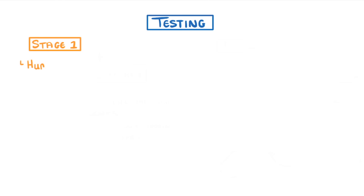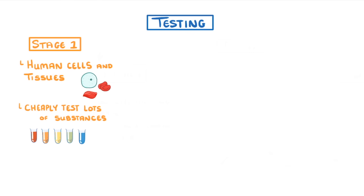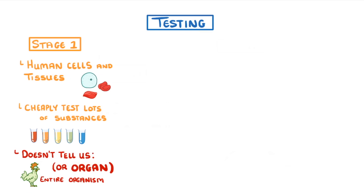Now that we know what we're looking for, we can look at the three main stages of drug testing. In the first stage, the substance that we think is going to make a good drug is tested on human cells and tissues, which can be grown in a laboratory. The benefit of this is that we can easily and cheaply test tons of different substances. The downside, though, is that this doesn't really tell us much about how the substance would affect an entire organism, or even how it would affect a particular organ.